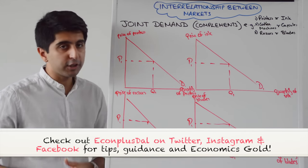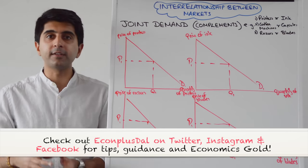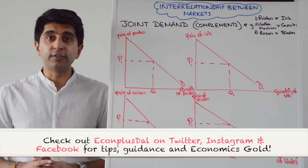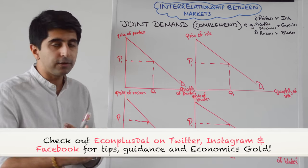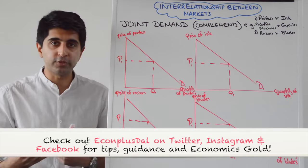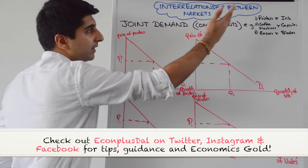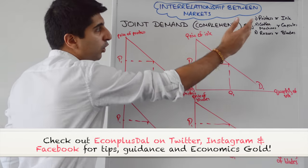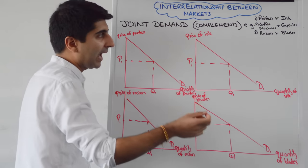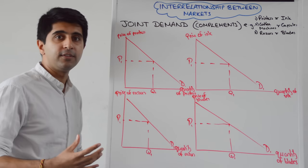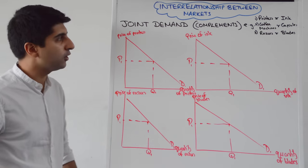We're going to start by looking at complements. Another name for goods that are complements are goods that are in joint demand, i.e. they are goods that are usually bought together. Some classic examples: printers and the printer ink, coffee machines and the capsules that go in them, razors and the blades. These are all good examples of complementary goods.